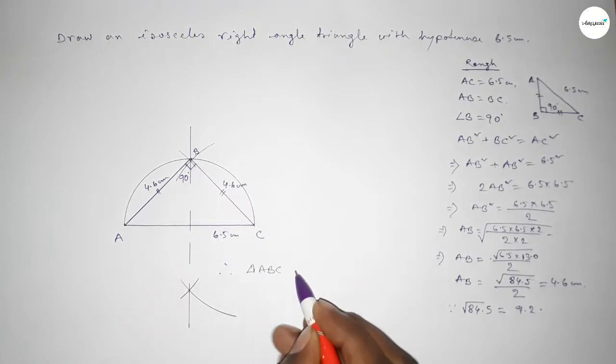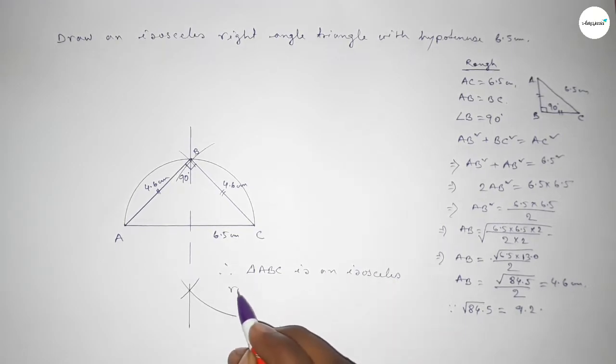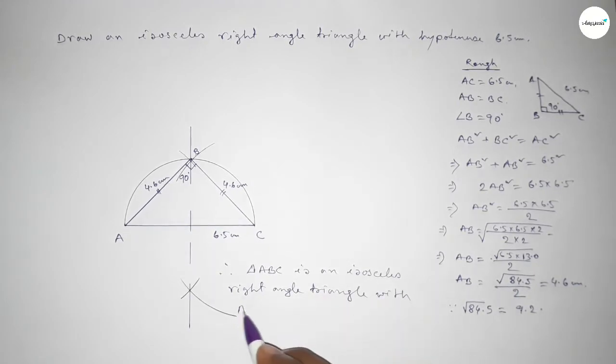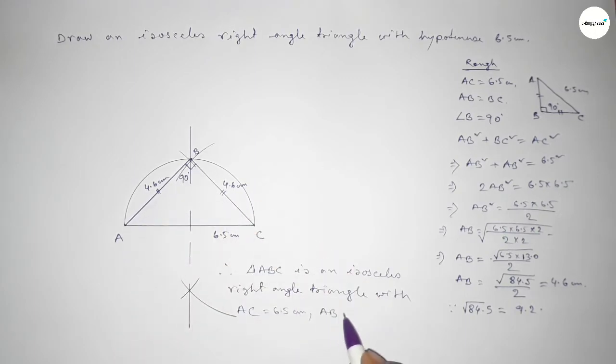Triangle ABC is an isosceles right angle triangle with given only hypotenuse AC equal to 6.5 centimeter and here two side AB equal to BC equal to 4.6 centimeter and angle B equal to 90 degree. That's all, thanks for watching. If this video is helpful to you then please share it with your friends.